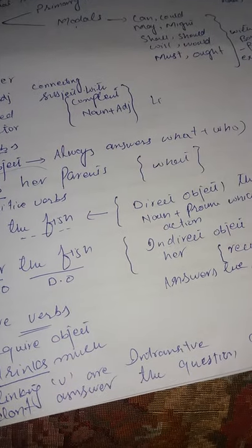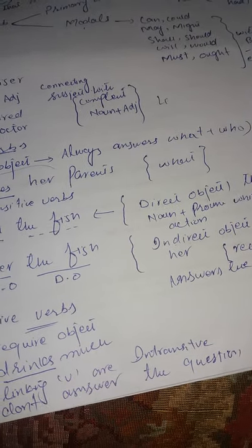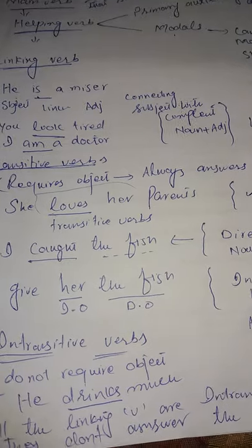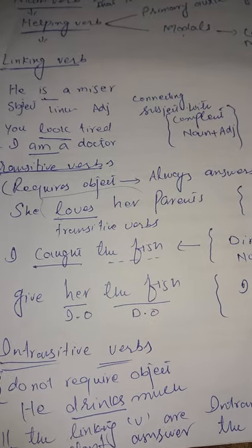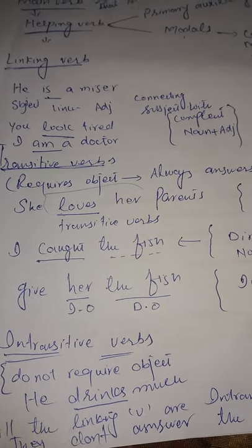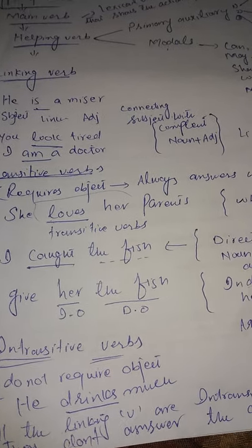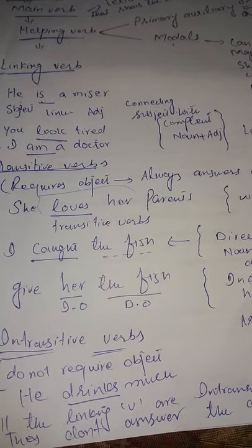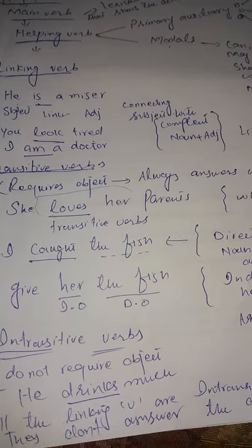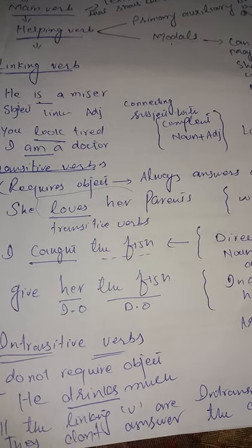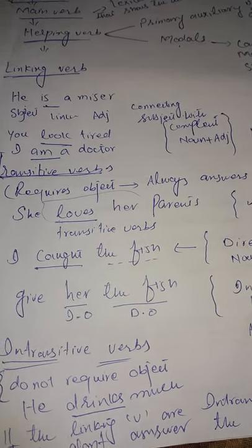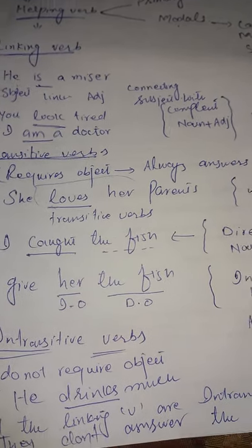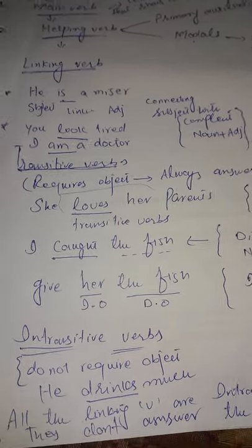A transitive verb always answers the question 'what?' For example: 'I am reading a novel.' When we ask 'I am reading what?' the answer is 'a novel.' So 'a novel' is the object of the transitive verb 'reading.'